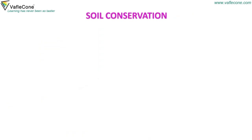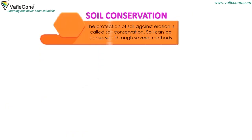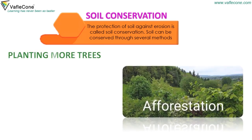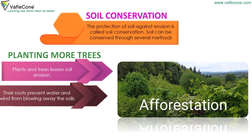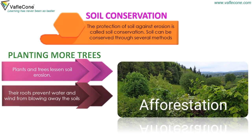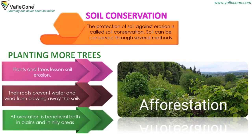Soil Conservation: The protection of soil against erosion is called soil conservation. Soil can be conserved through several methods. Planting more trees: Plants and trees lessen soil erosion. Their roots prevent water and wind from blowing away the soil. Reforestation is beneficial both in plains and in hilly areas.